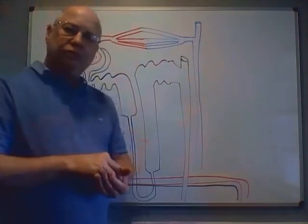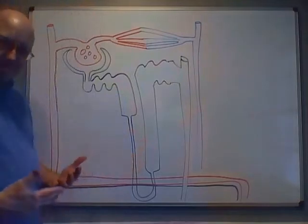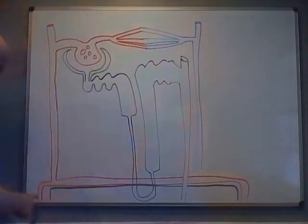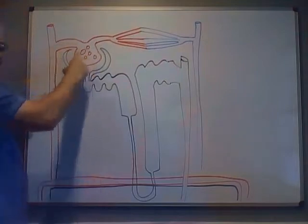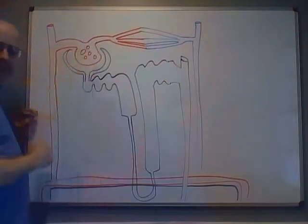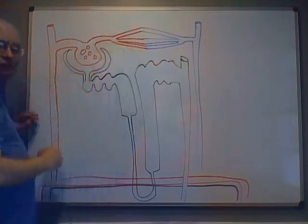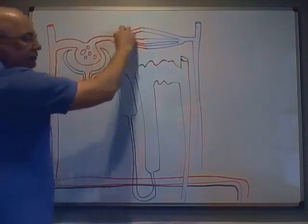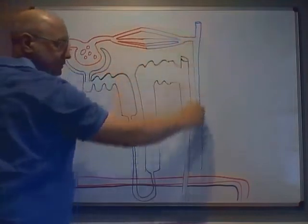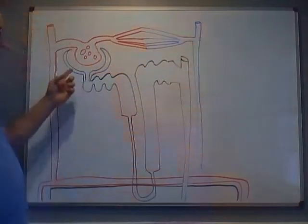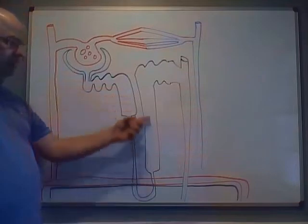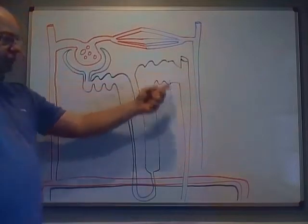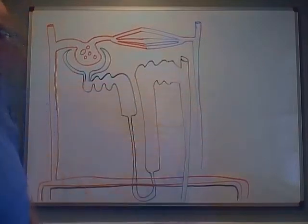In the last video we went over the anatomy of the nephron. Quick review: we have the interlobar artery, arcuate artery, cortical radiate artery, afferent arteriole, the capillary bed called the glomerulus, the efferent arteriole, the peritubular capillary, a venule, and the cortical radiate vein. We have the Bowman's capsule, the proximal convoluted tubule, the loop of Henle, the distal convoluted tubule, and the collecting duct.